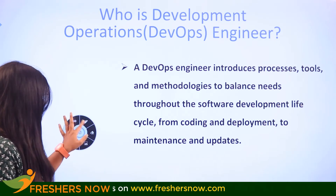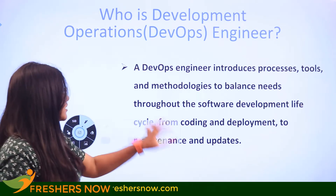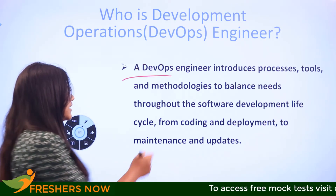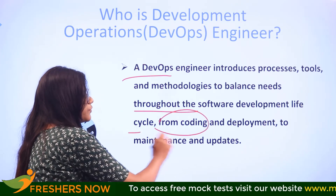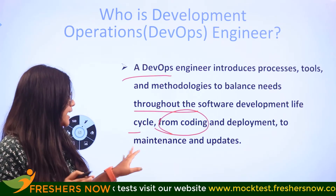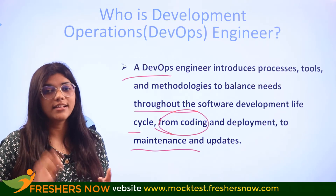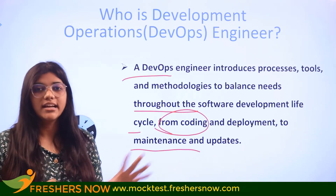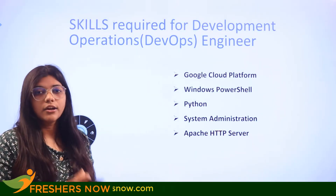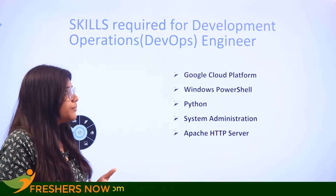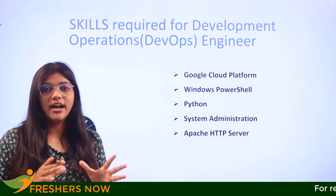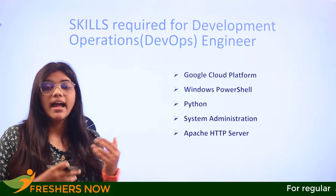We'll begin with the introduction. A DevOps engineer introduces processes, tools, and methodologies to balance the needs throughout the software development life cycle — from coding to deployment, as well as maintenance and further updates. To get into this role, you need foundational skills like Google Cloud Platform, Windows PowerShell, Python, system administration, and HTTP server.